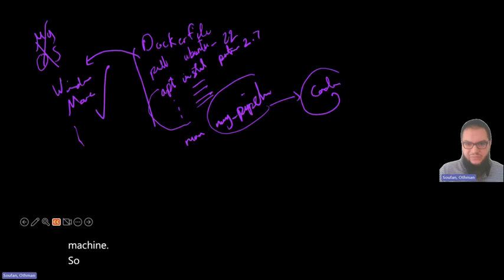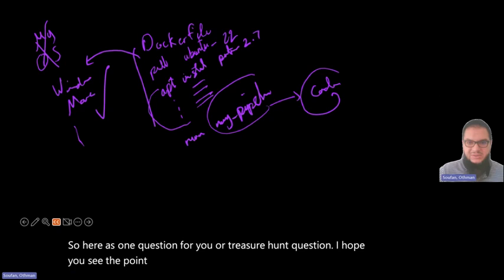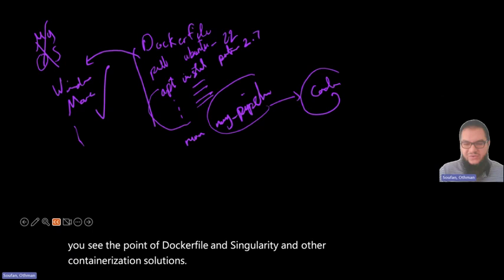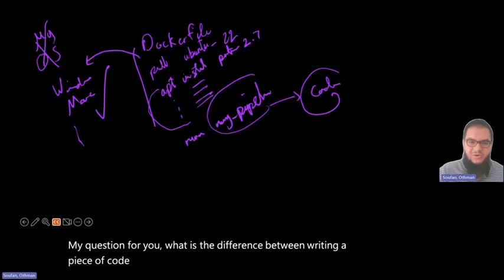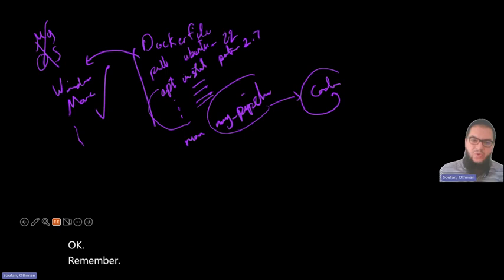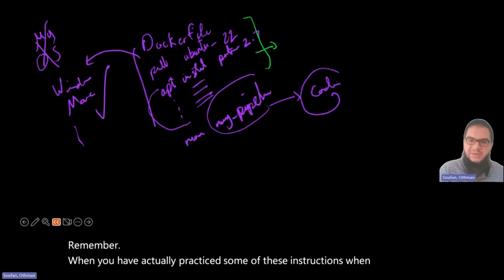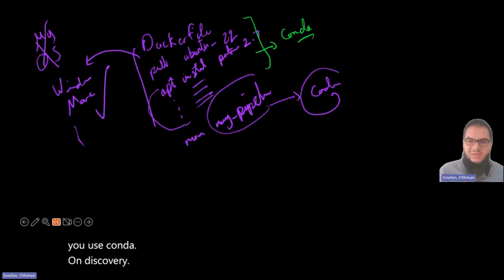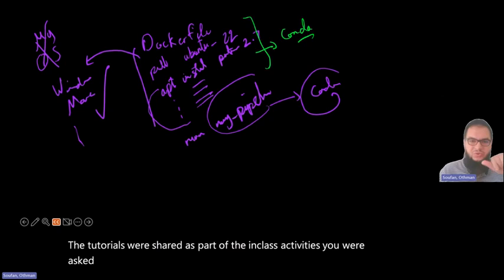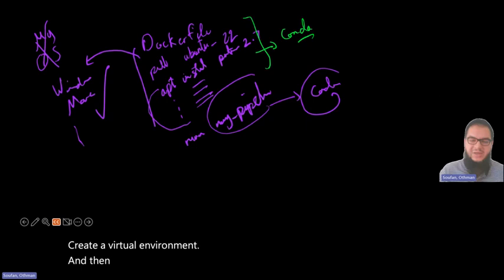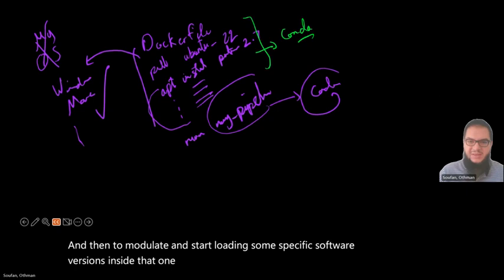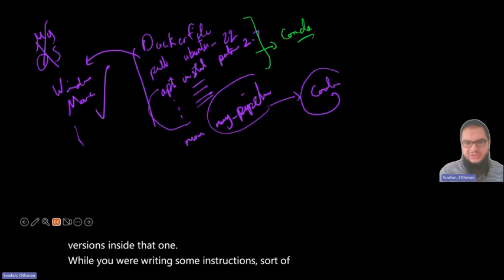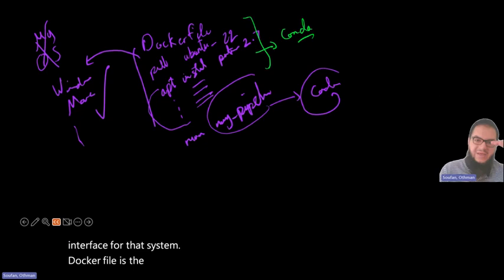Here is a treasure hunt question: I hope you see the value of Dockerfile and Singularity and other containerization solutions. My question for you — what is the difference between writing a piece of code and writing a Dockerfile? Remember when you practiced using conda on discovery: you were asked to create a virtual environment, then module load and start loading specific software versions. Writing a Dockerfile is the way to do that in a very systematic way through written instructions.